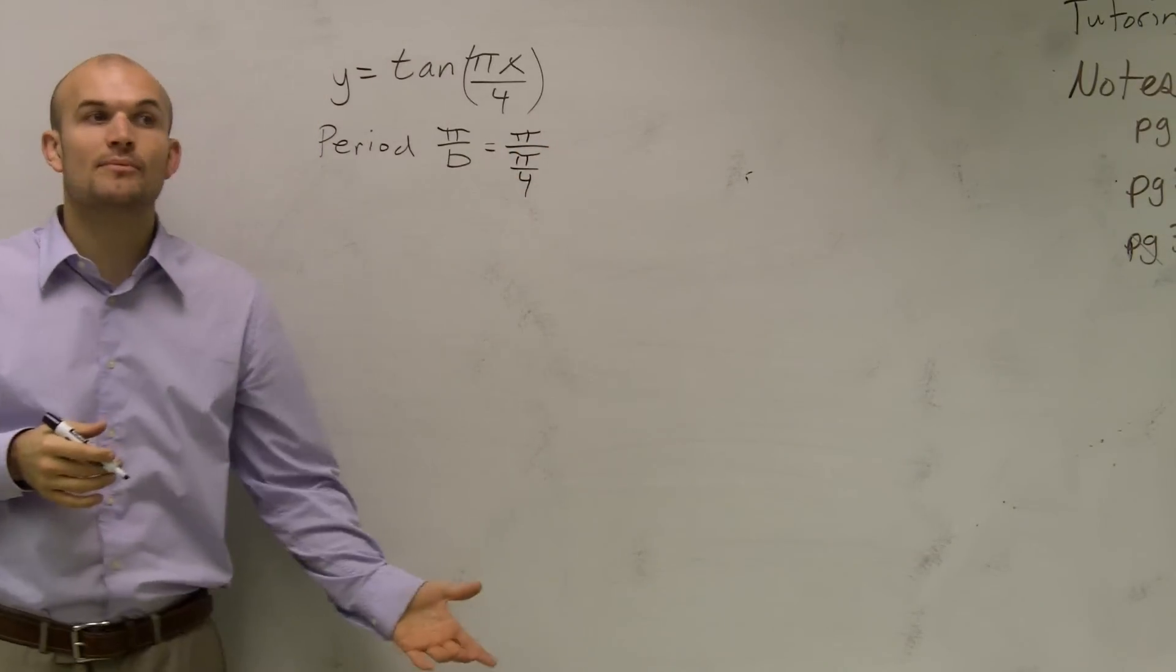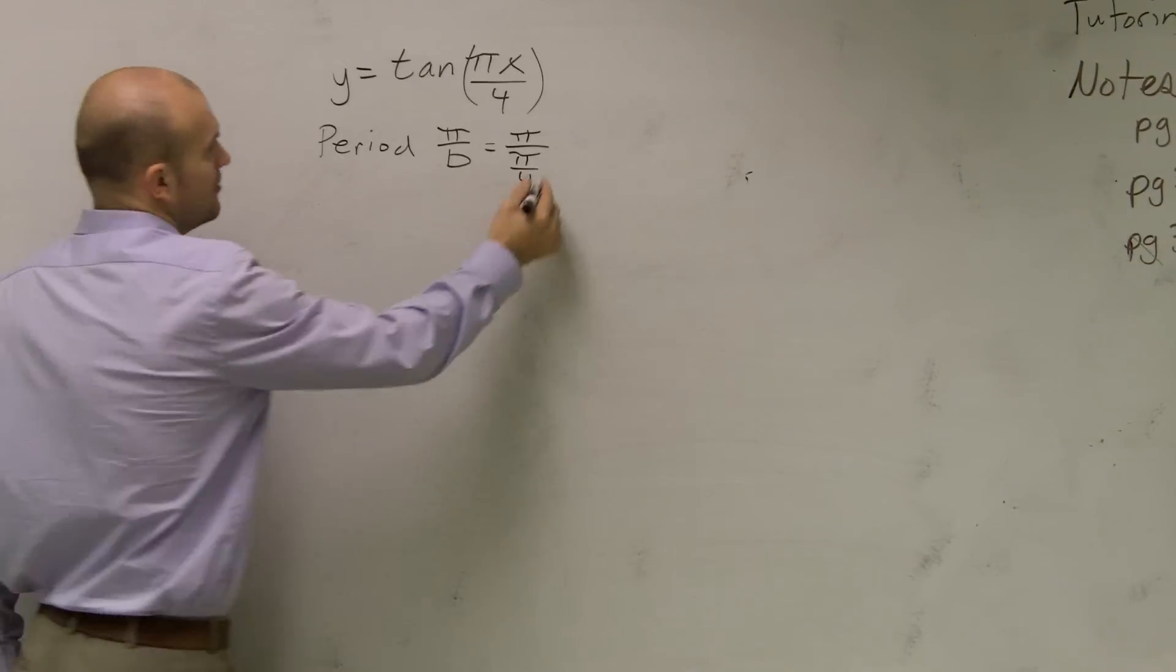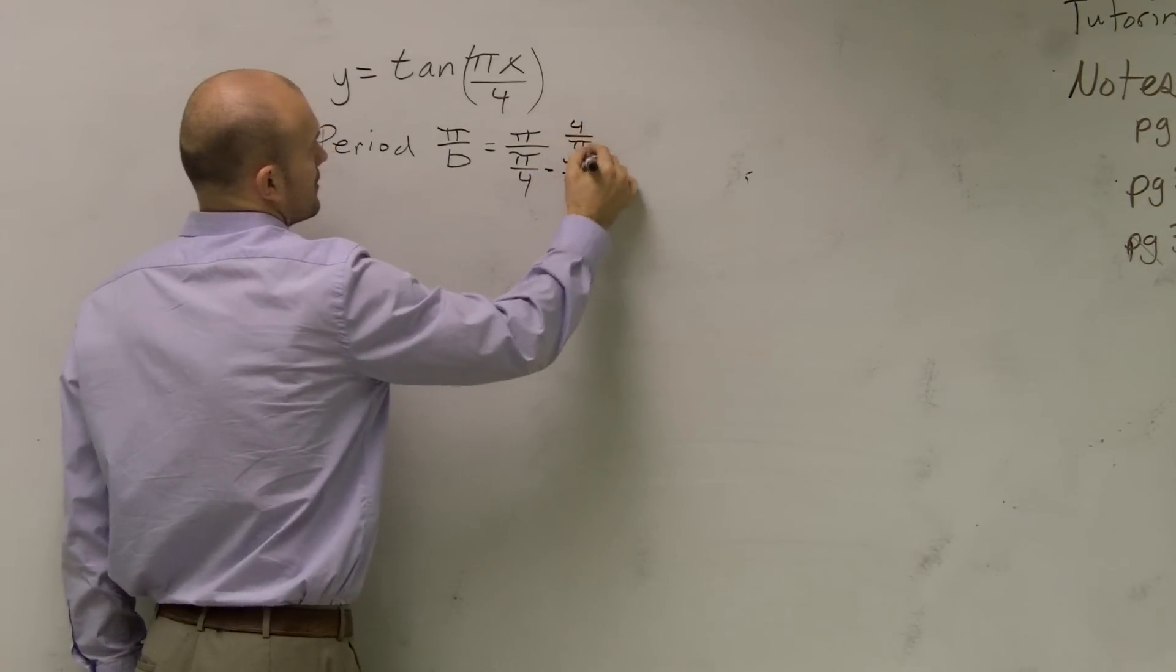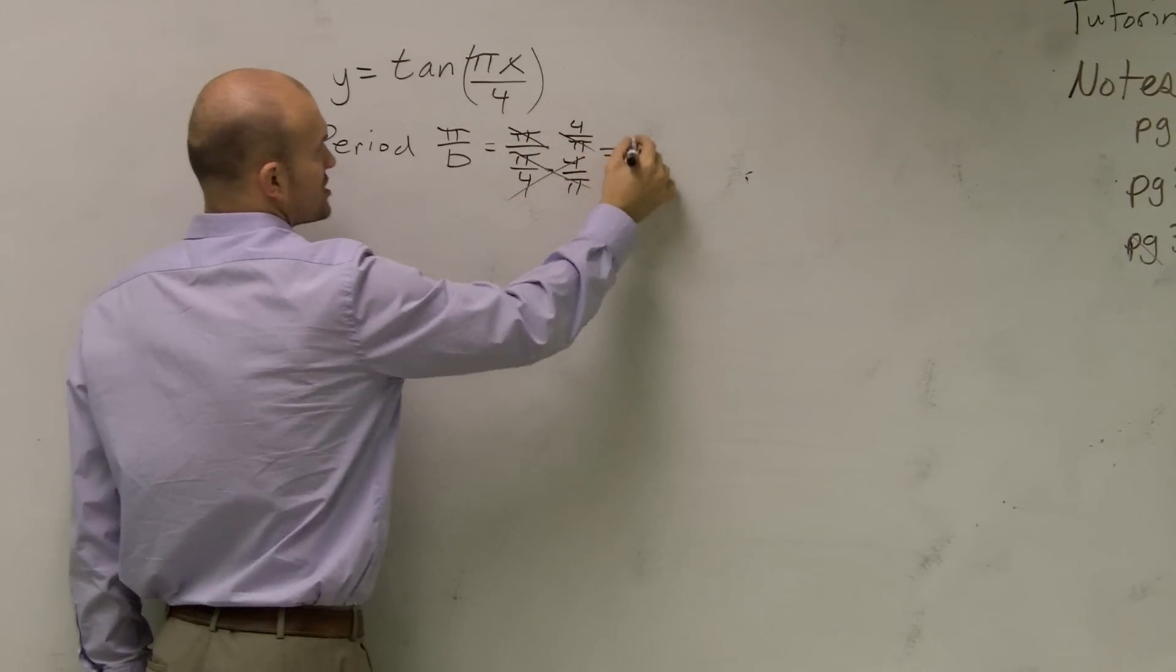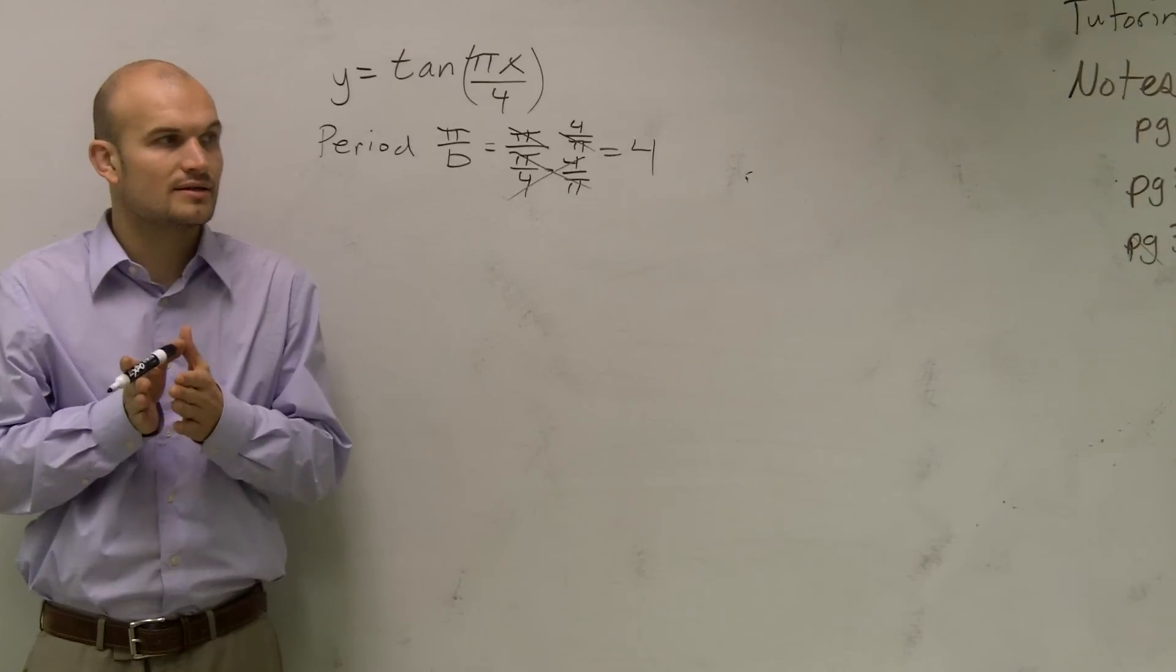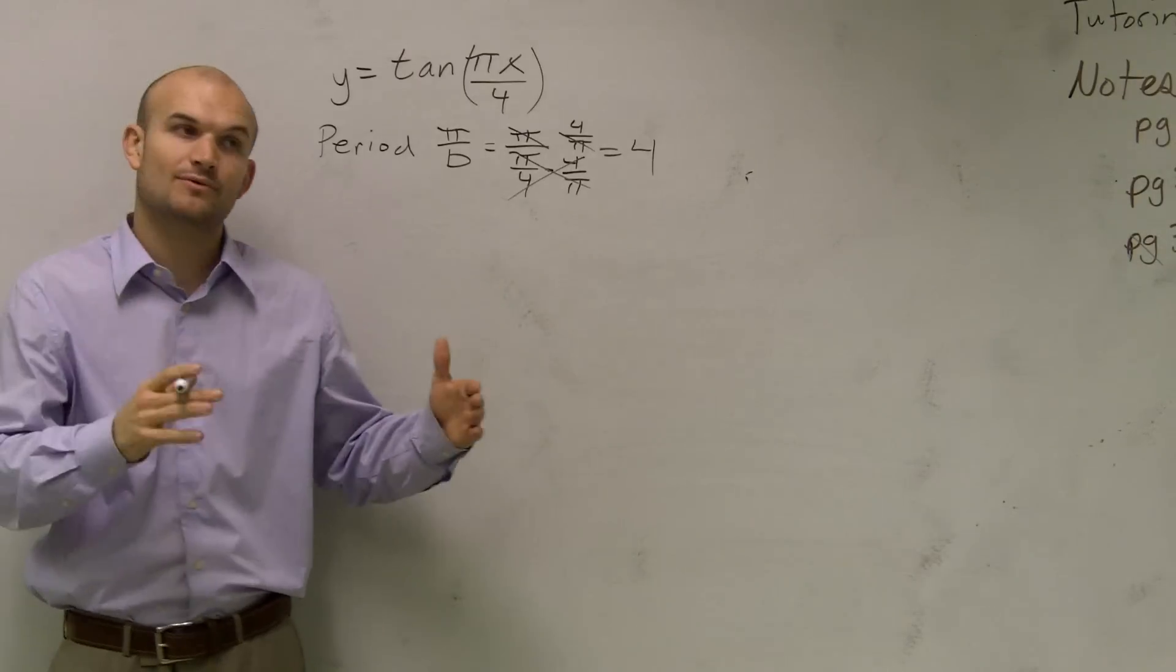Whenever we have a number divided by a fraction, multiply by the reciprocal. Those cancel out, and I'm left with 4. That means for the first period, it's going to take 4 units to complete one cycle.